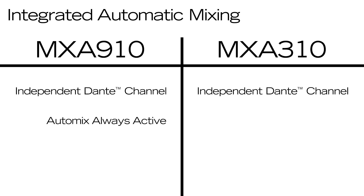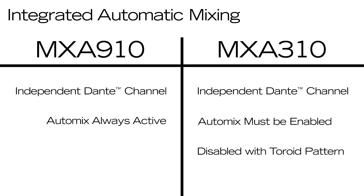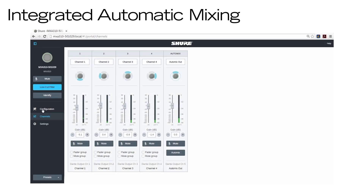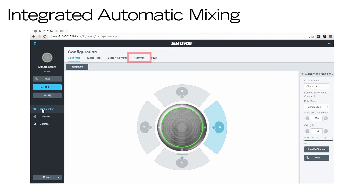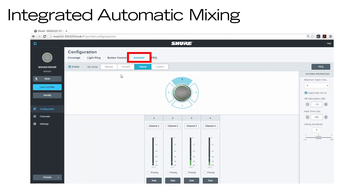On the MXA910, the AutoMix channel is always active. On the MXA310, it must be enabled. It's also important to note that AutoMixing is disabled when you use the toroid pattern. You can access AutoMix settings in the web application through the Channels view, or in the AutoMix menu under the Configuration tab.